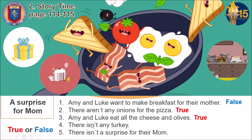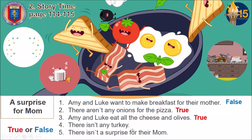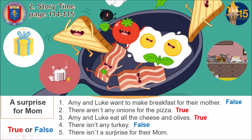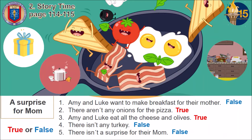They were hungry! Number four: there isn't any turkey — so they don't have turkey. Remember the turkey? That is false, because they do have turkey. As you can see in the images, there is the turkey. Number five: there isn't a surprise for their mom — that is false because the surprise was that the kitchen was very dirty, a complete mess, as you can see here.